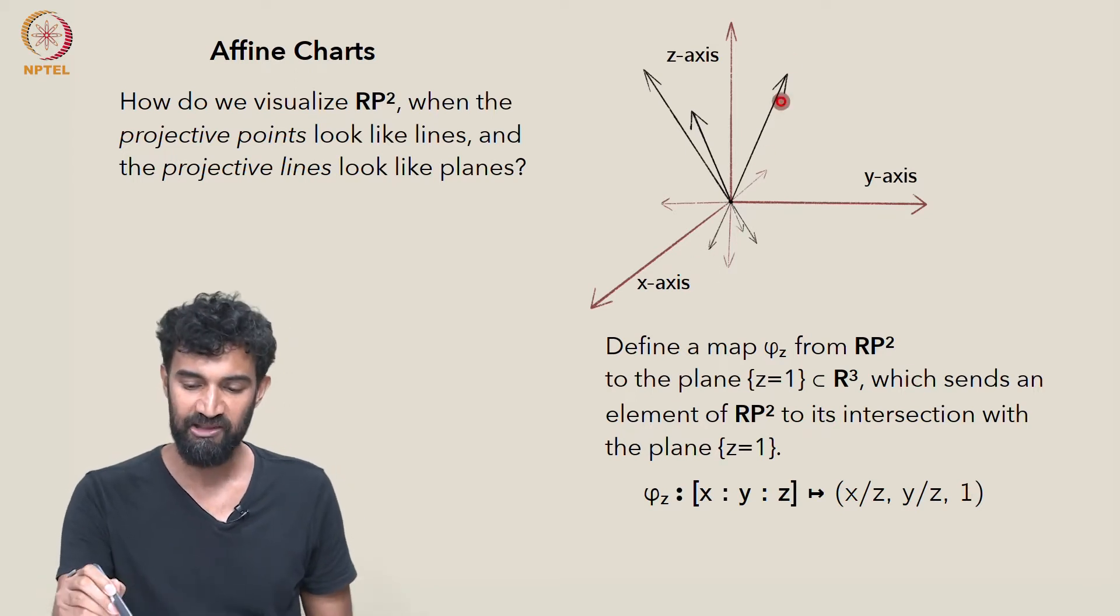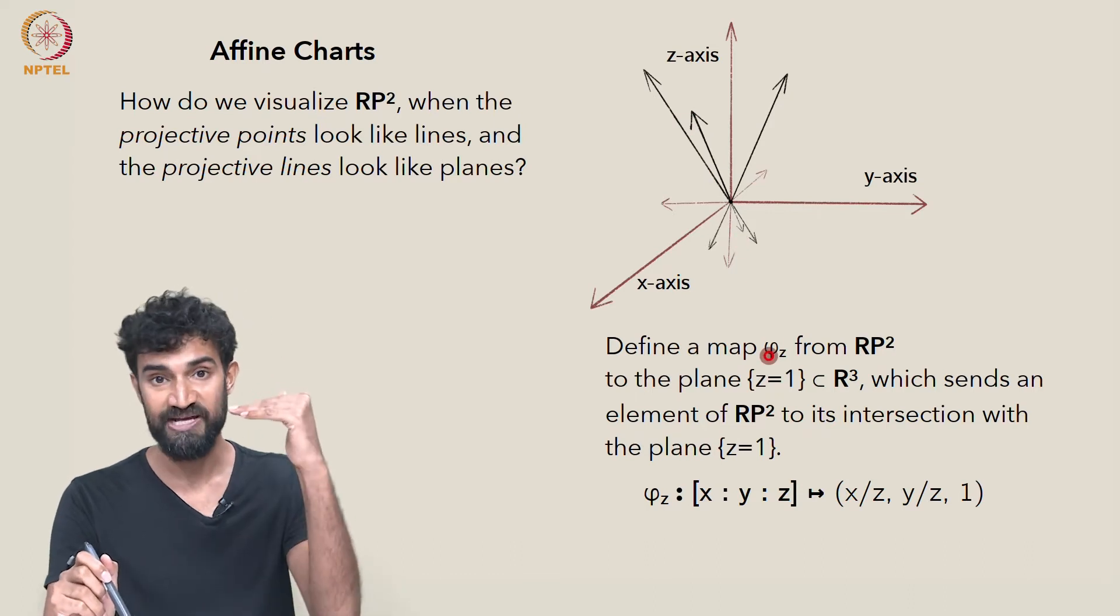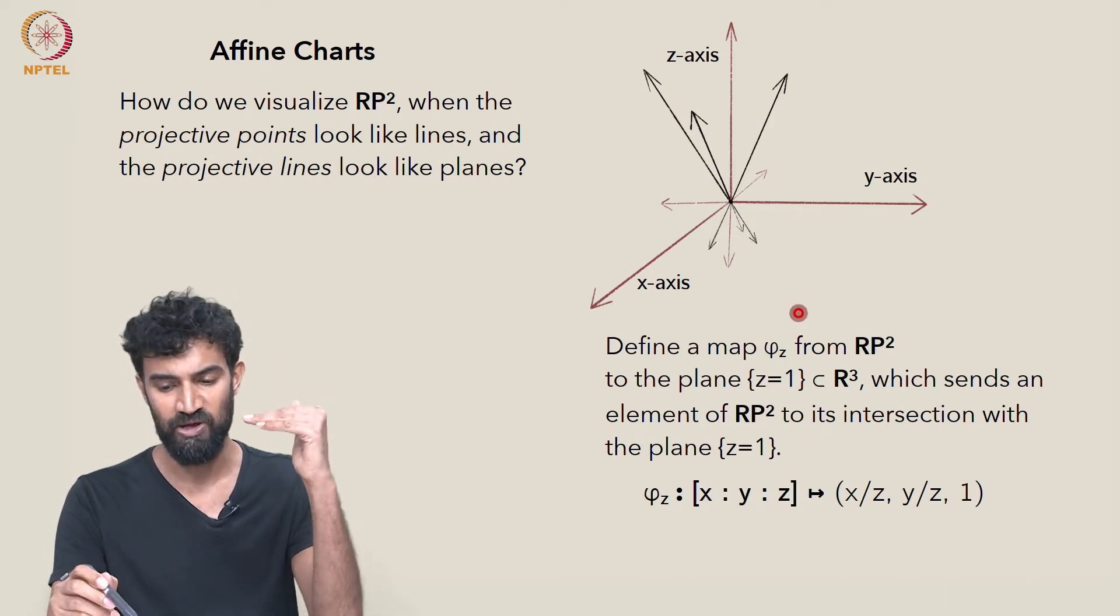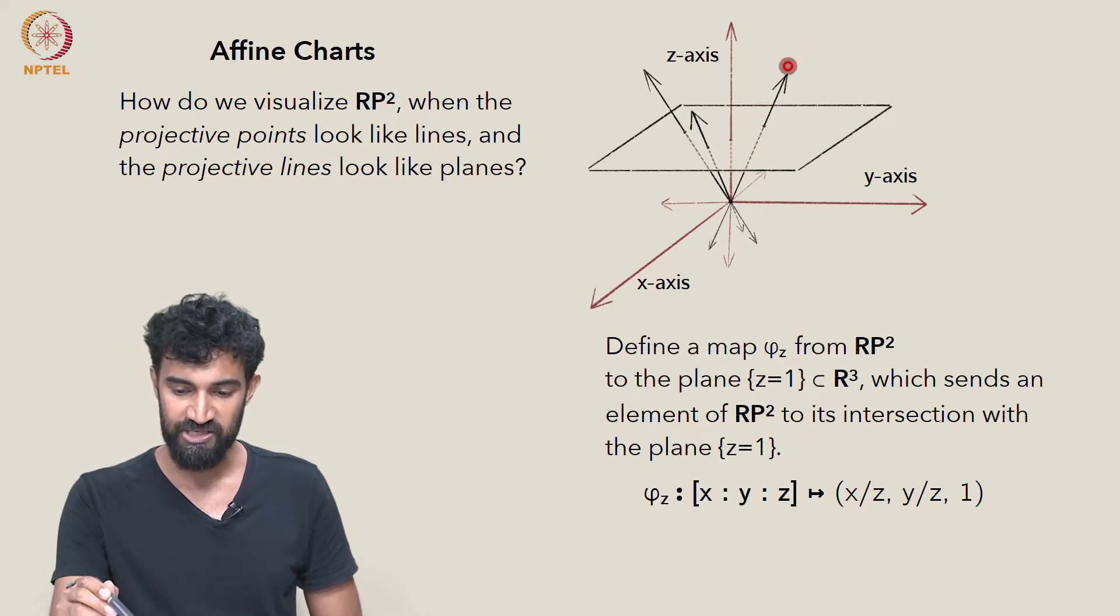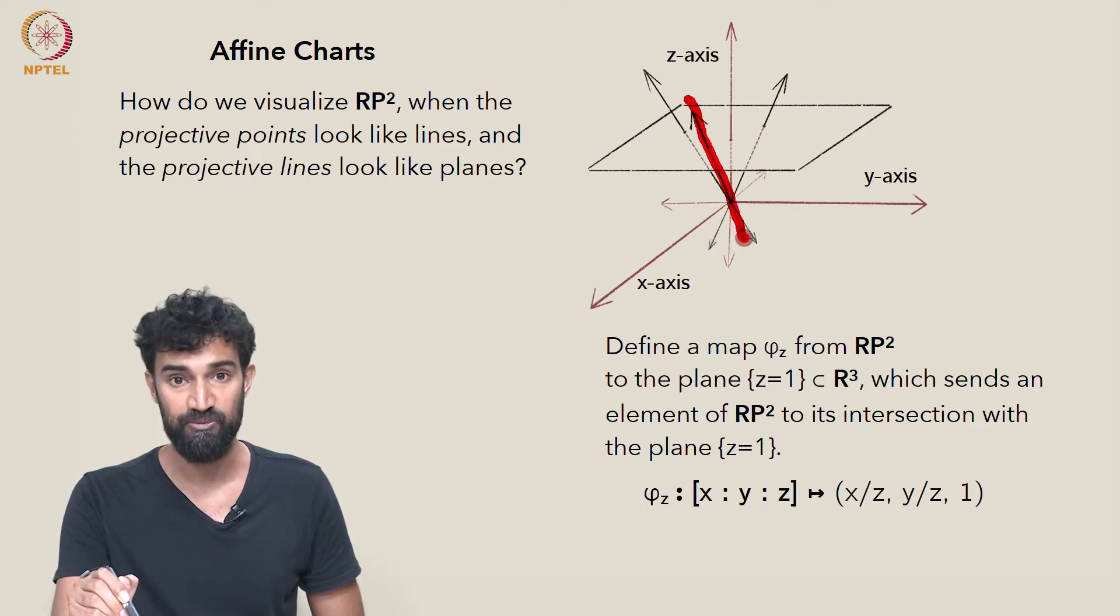Pictorially, what are we doing? We're just taking a line through the origin, one of these lines through the origin, and just seeing where it intersects the plane z equals 1. So then this line through the origin, this element of RP², gets mapped to this point in z equals 1. This line through the origin, which is an element of RP², gets sent to this point in z equals 1.